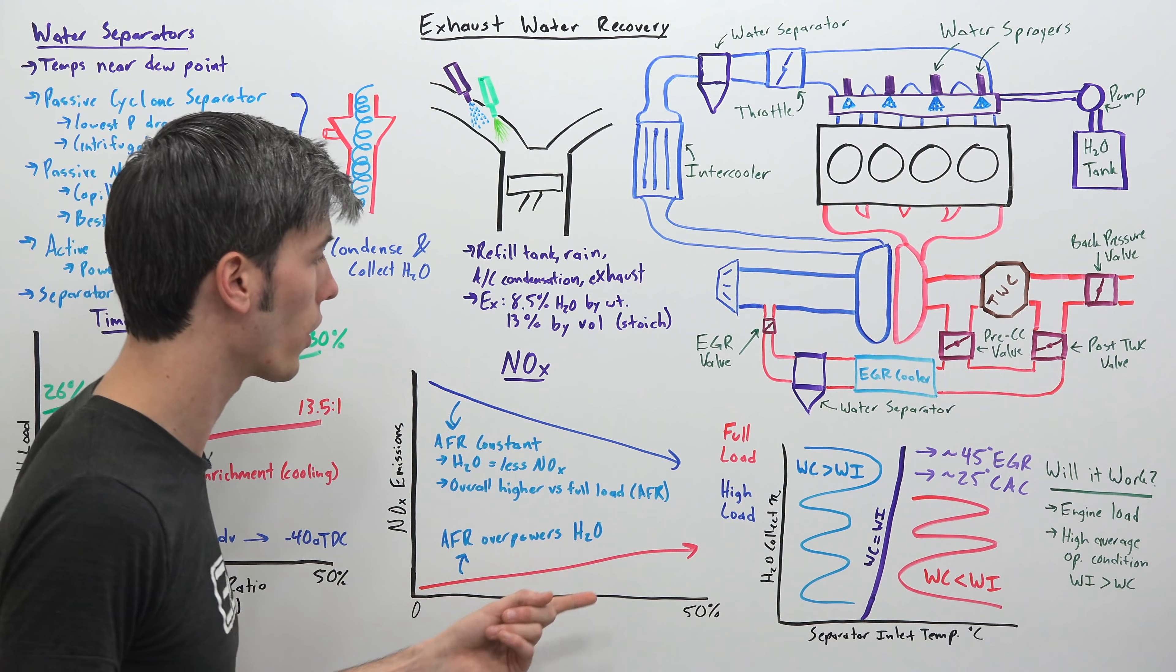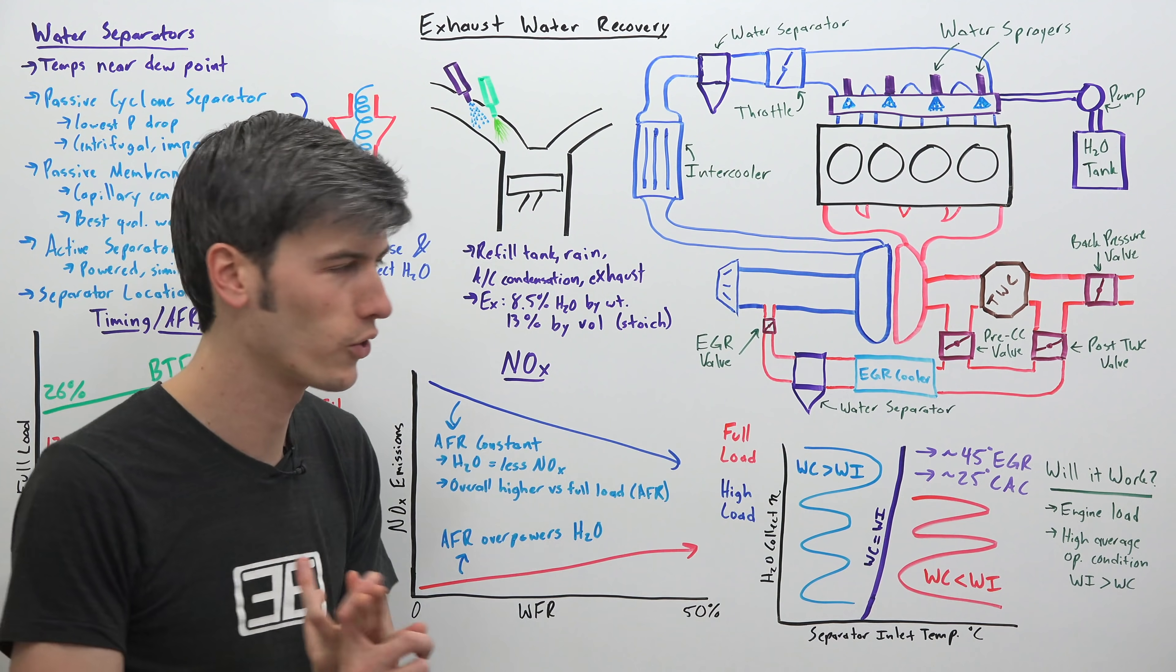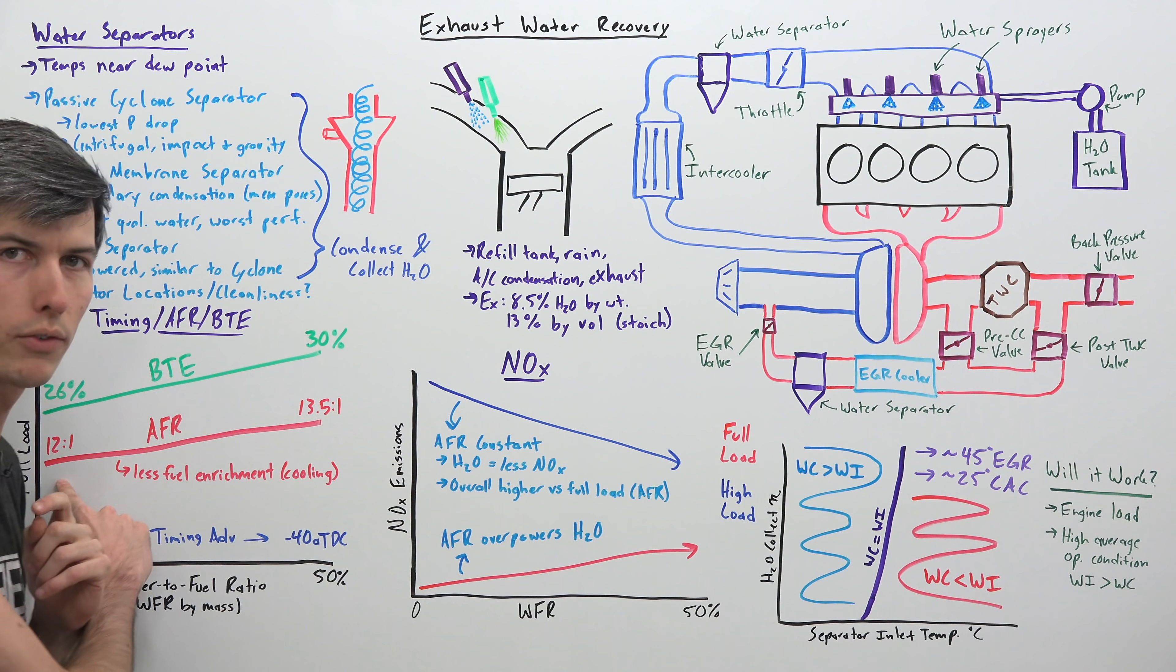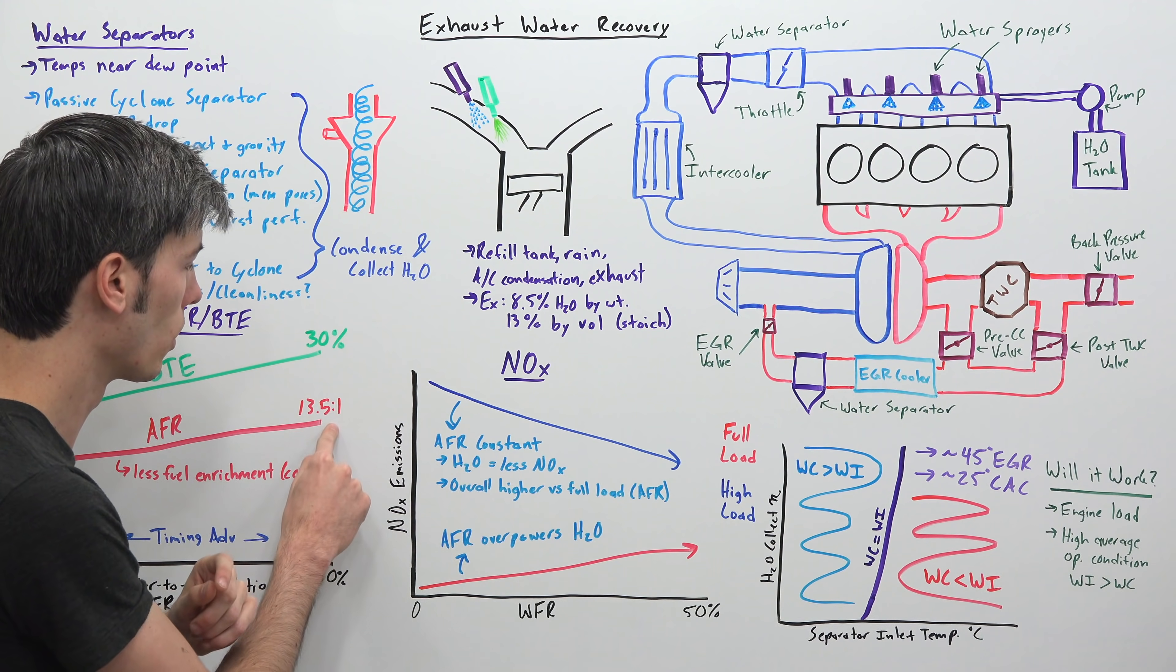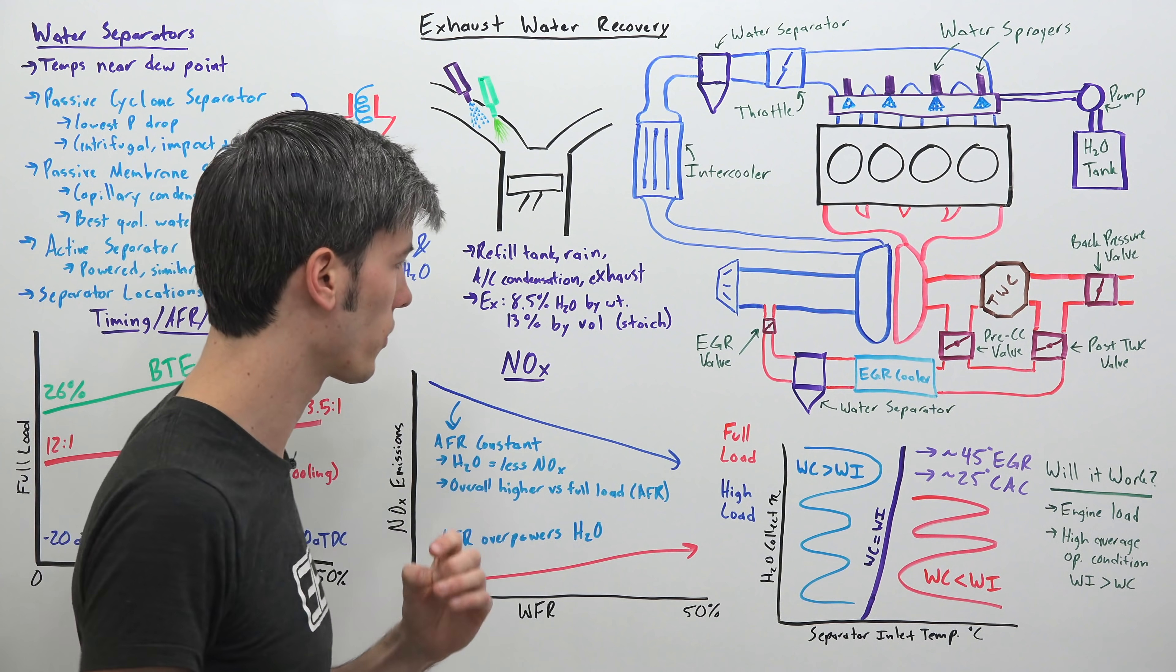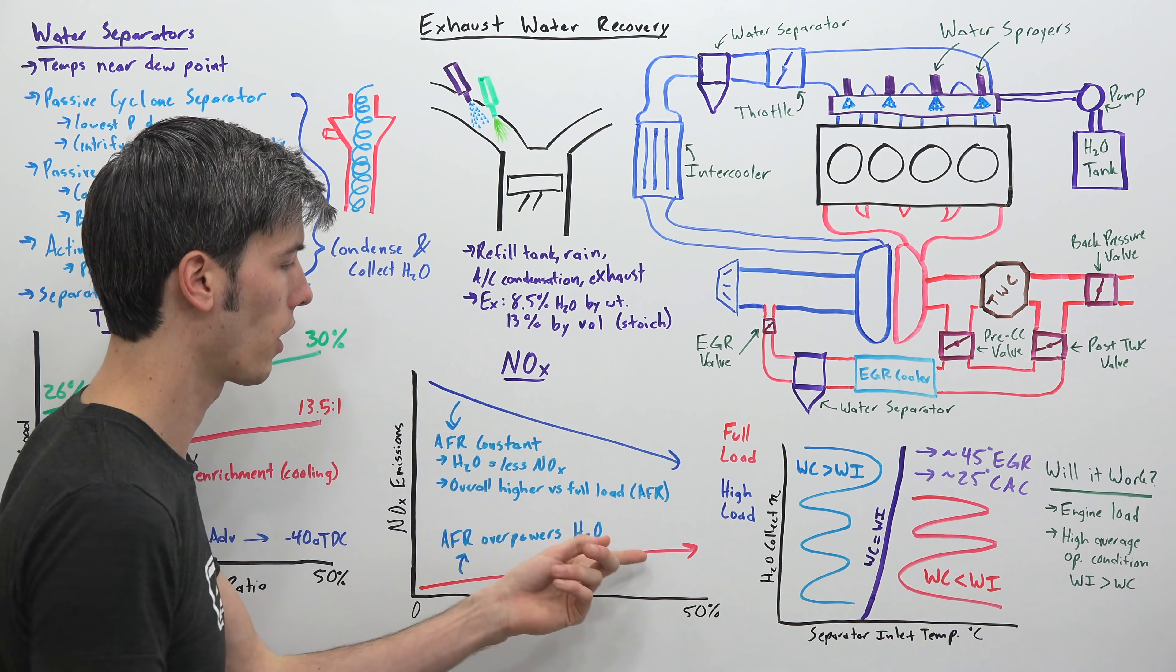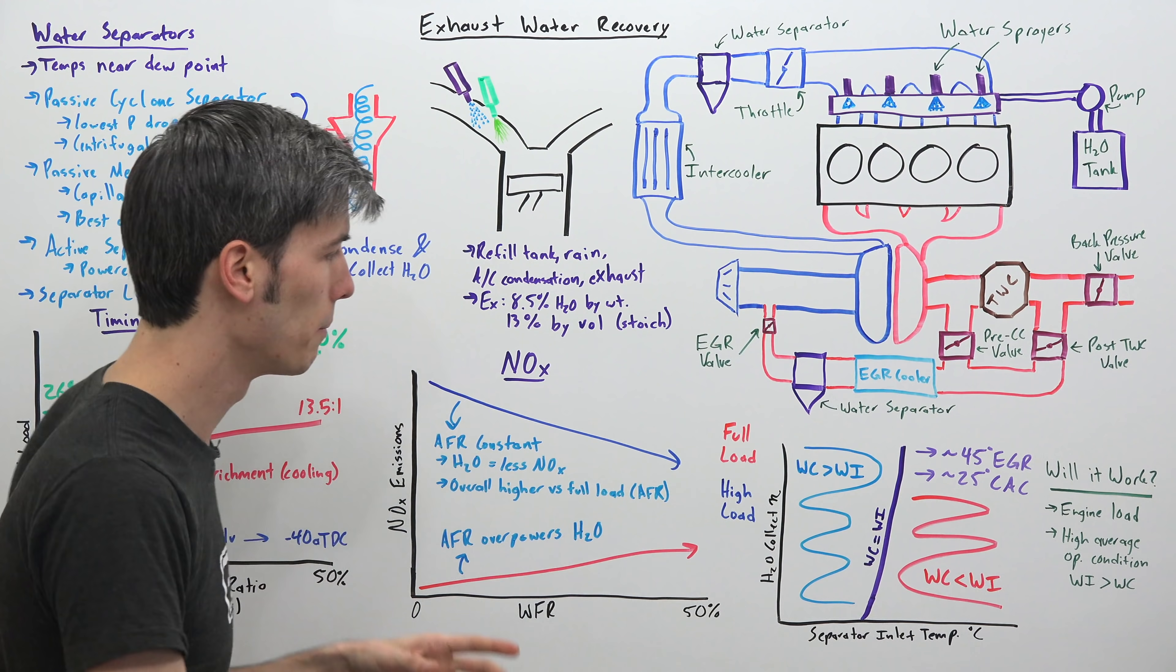So why would the nitrogen oxide emissions increase by injecting water if we know that injecting water means that you will have less nitrogen oxide emissions? Well the reason is there's something else that's changing here. So remember we're going from an air fuel ratio of twelve to one to thirteen point five to one. And the closer we get to stoichiometric air fuel ratios the greater nitrogen oxide emissions we have. And so that's why you actually see this, this air fuel ratio effect is actually overpowering the effect of injecting the water.